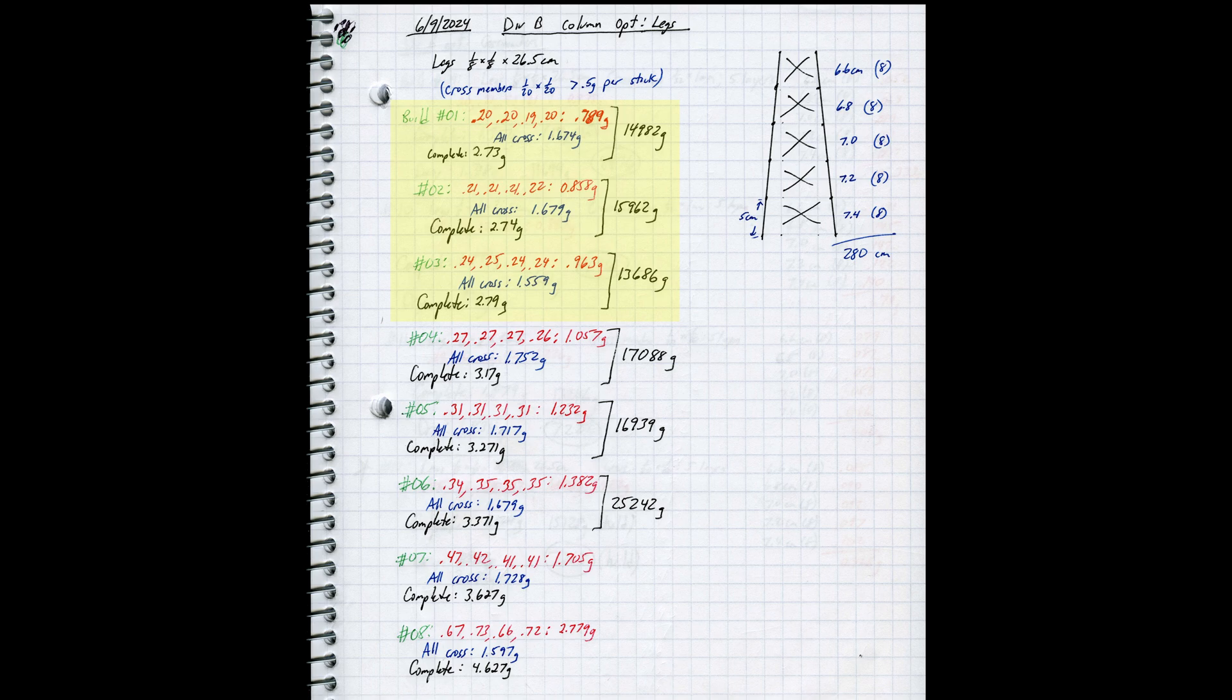The next thing is that the legs in the 0.20-0.25 gram range might work for a bonus build but are most likely better suited for a non-bonus build where you don't have to hold the entire 15 kilograms. Finally, the Goldilocks zone for leg mass for bonus towers is most likely in the 0.26-0.32 gram range, at least given these over-designed cross members. We'll see shortly if that still holds when we choose more balanced material for those pieces.